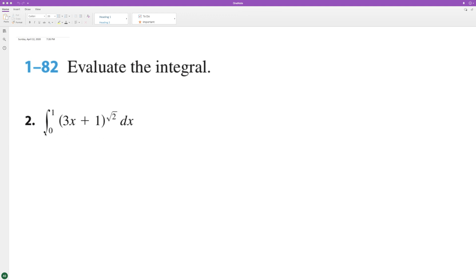Here we evaluate the following integral from 0 to 1. To make this easier, we'll use a substitution. We'll set 3x plus 1 equal to t.